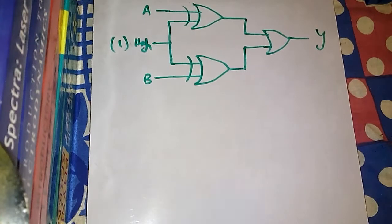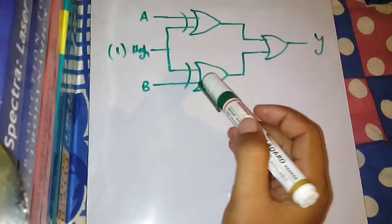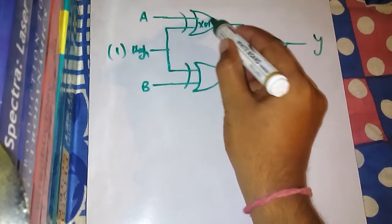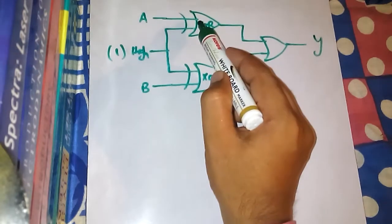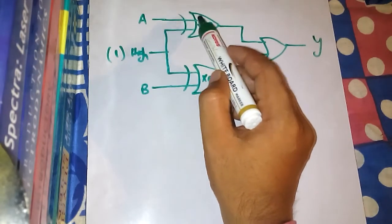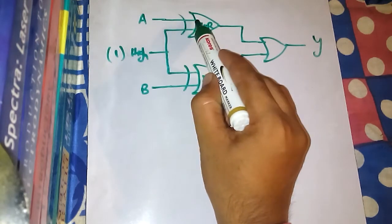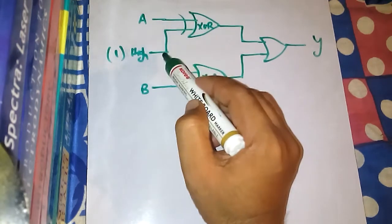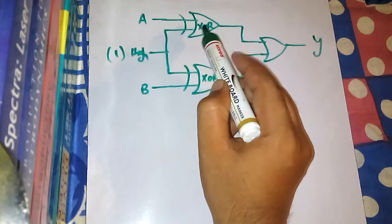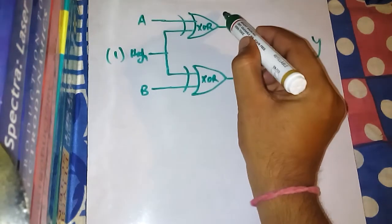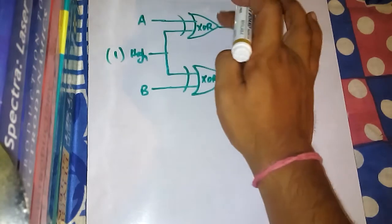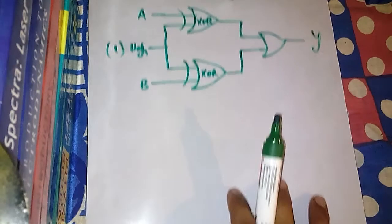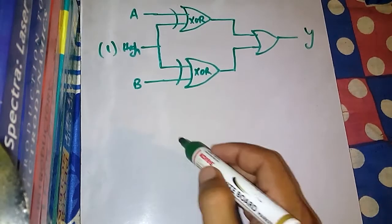We have the given circuit written down. This is the given circuit where this is an XOR gate and this is also an XOR gate. The upper XOR gate has two inputs — one input is A and the other input is a high input, that is one. So the output from this XOR gate would be A bar.